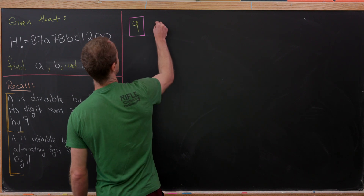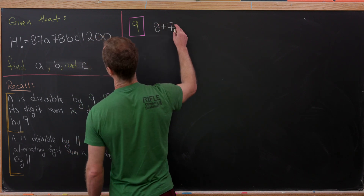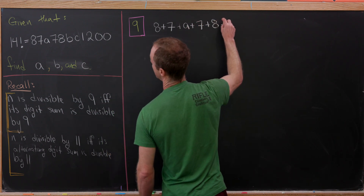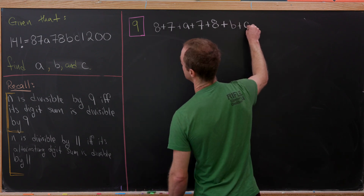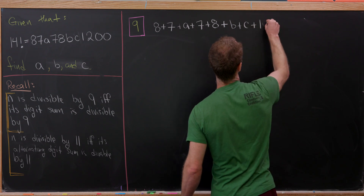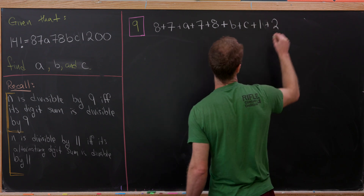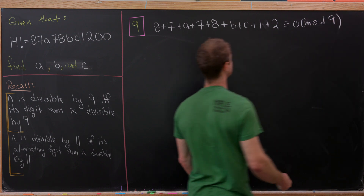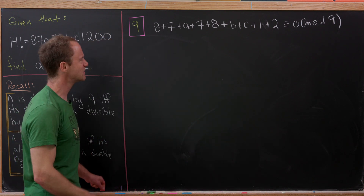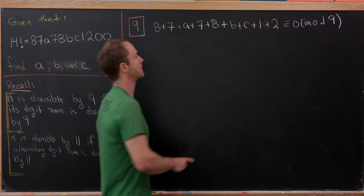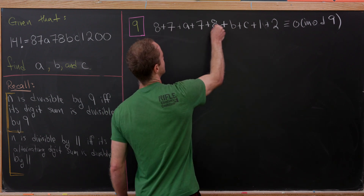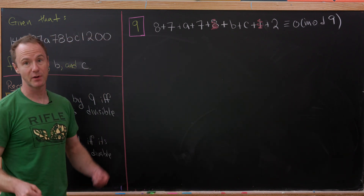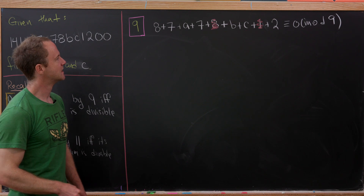Let's take the digit sum. We have 8 + 7 + A + 7 + 8 + B + C + 1 + 2, and we don't really need the plus 0 plus 0. We need this to be divisible by 9 — in other words, congruent to 0 mod 9. Let's simplify this a bit at a time. Notice that 8 + 1 is 9, so we can disregard that part since it's 0 mod 9.